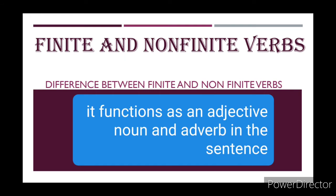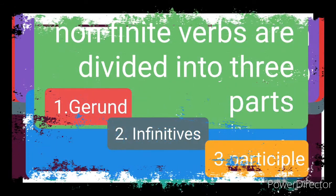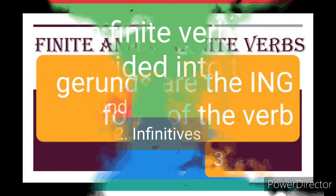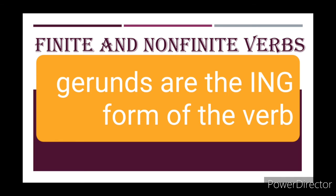Non-finite verbs are further divided into three main parts: first is gerund, second is infinitive, and third is participle. So what is a gerund? Gerunds are the '-ing' form of the verbs. When we use a verb in place of a noun, it is called a gerund. We form a gerund by adding '-ing' to the verb's first form and using it as a noun.